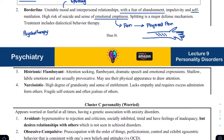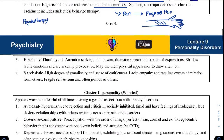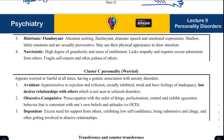Next, histrionic personality disorder — these are the ones who seek attention; they have to be in the center of attention. They are sexually provocative, using their sexuality to gain attention. Next we have narcissistic personalities — the narcissists. A good example is politicians. They have a high degree of grandiosity and a sense of entitlement, no empathy, and require excessive admiration from others.